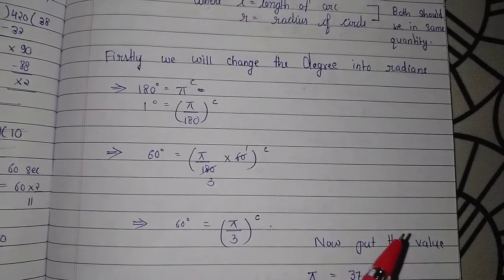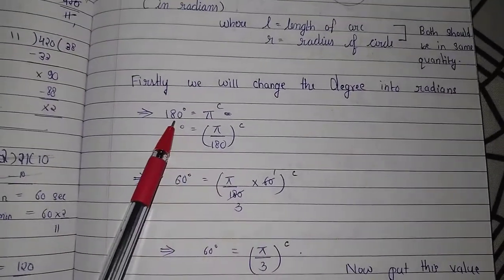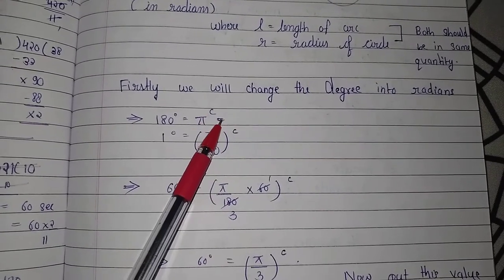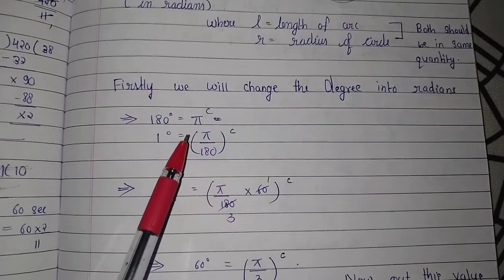Firstly, we will change the degree into radians. 180 degrees is equal to pi radians, so 1 degree equals pi upon 180 radians.